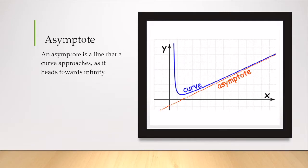When we're working with rational functions, we often have asymptotes. An asymptote is a line that our graph will not cross, and as a curve approaches it, it heads towards infinity.